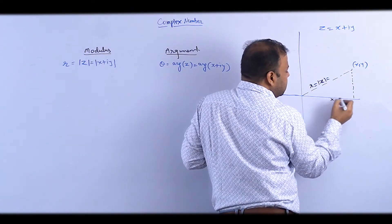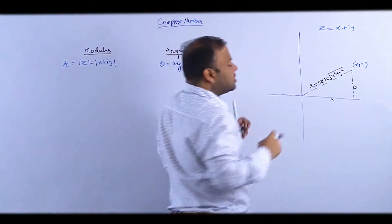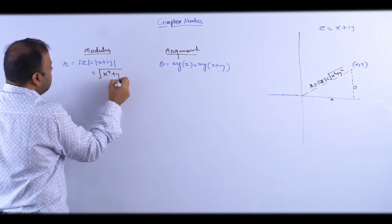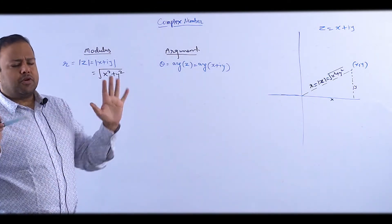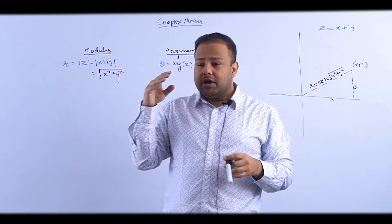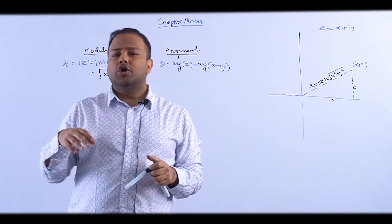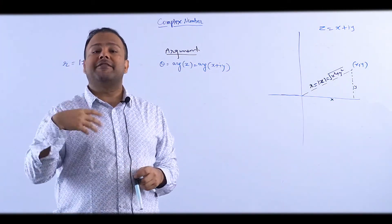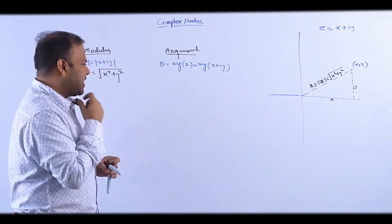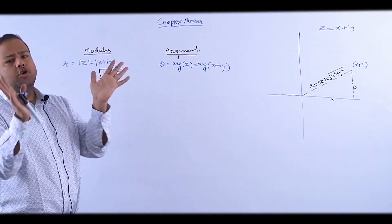We know that one part is x and the other is y, so the distance will be √(x²+y²). So modulus of x+iy equals √(x²+y²). Complex numbers are very similar to vectors — there is a lot of similarity. There are many vector equations we can solve faster using complex number concepts, and vice versa, because both are fundamentally two-dimensional concepts.